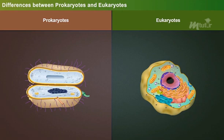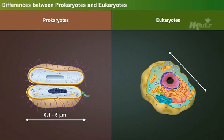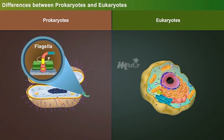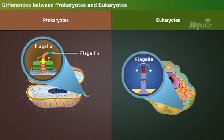Let us look into the details which differentiate eukaryotes from prokaryotes. The diameter of a prokaryotic cell ranges from 0.1 to 5 micrometers, whereas the diameter of a eukaryotic cell ranges from 10 to 100 micrometers. Flagella of prokaryotes are small, simple structures composed of the protein flagellin, whereas in eukaryotes, the flagella are long, complex structures.